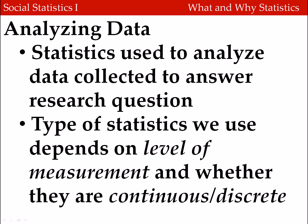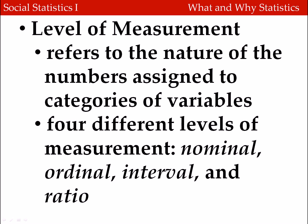The type of statistics that we use are going to depend on several different considerations. Among these are the level of measurement of the variable and whether the variables are continuous or discrete. Level of measurement refers to the nature of how numbers are assigned to the categories of variables. We can only do statistical analysis on things that have numbers associated with them, so there are basically four different levels of measurement any variable can take on: nominal, ordinal, interval, or ratio.